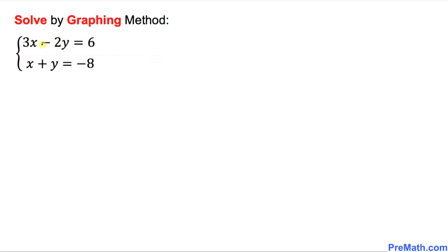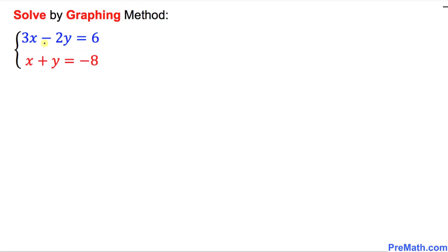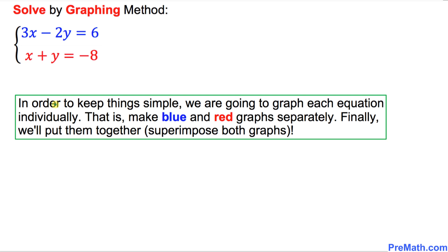The very first thing we are going to do is give different colors to these equations. I am going to make the top equation blue and the bottom one red. Here is our action plan and strategy: in order to keep things simple, we are going to graph each equation individually, making red and blue graphs separately, and finally we will superimpose them together.